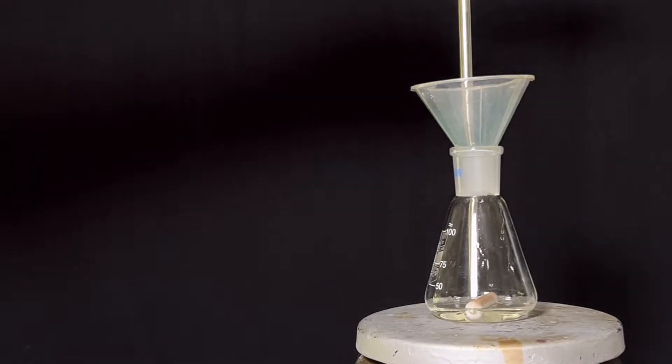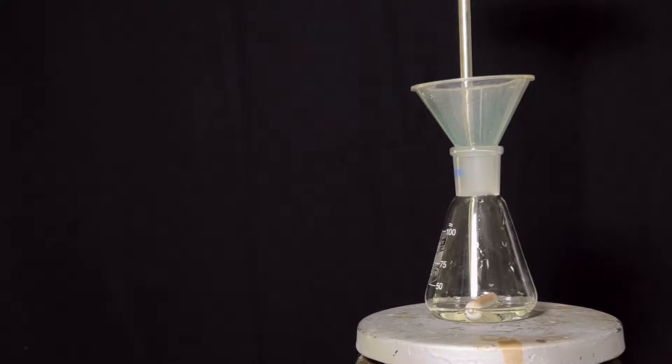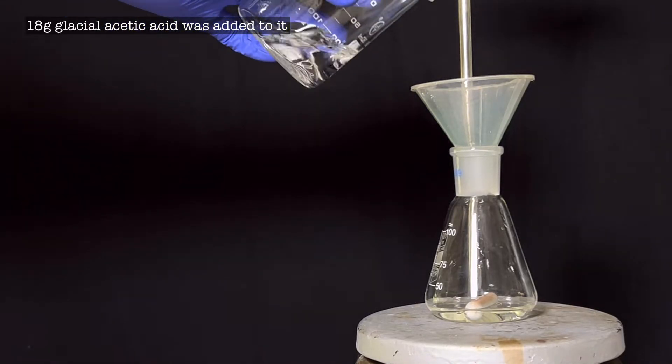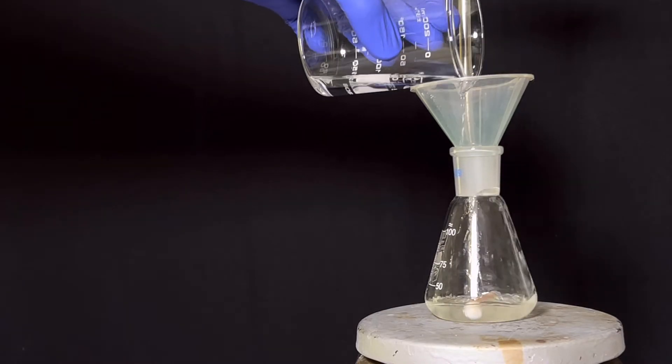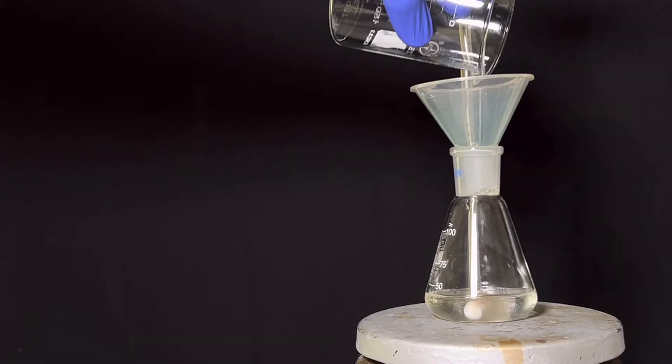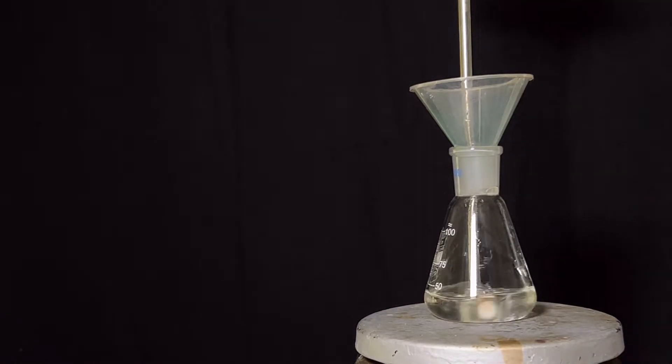Cyclohexanone was synthesized in one of my previous videos and link to that is given in the description. Next, 18 grams of glacial acetic acid was added to the flask. Stirring was then turned on.